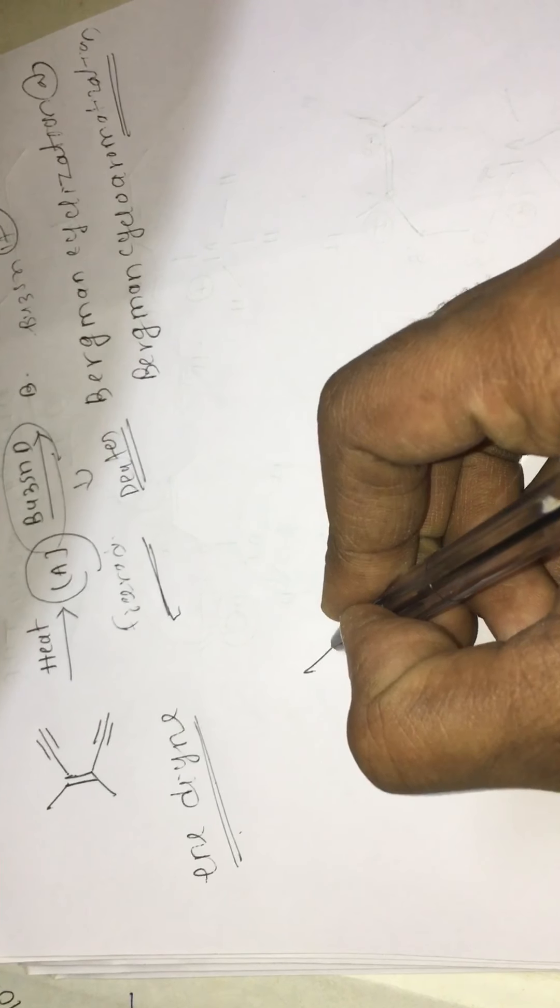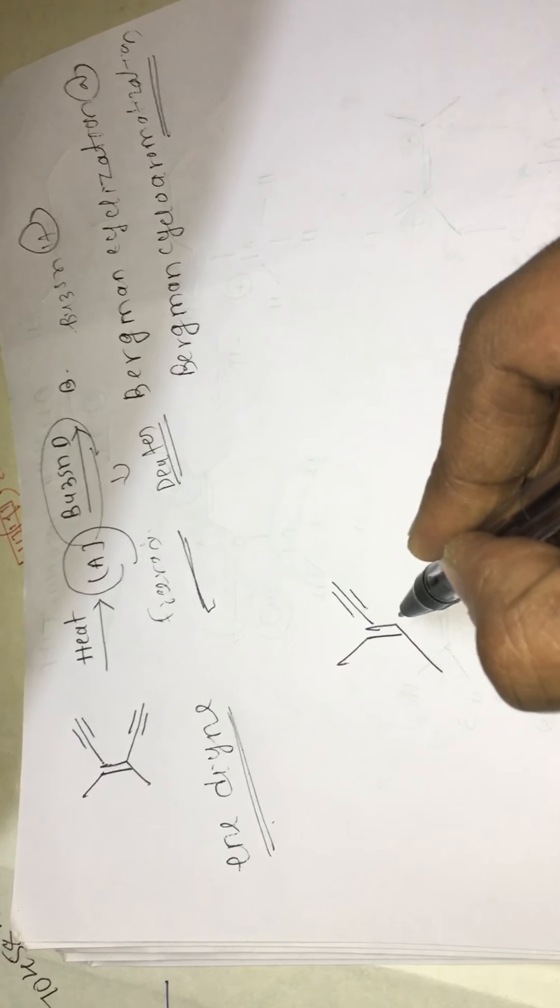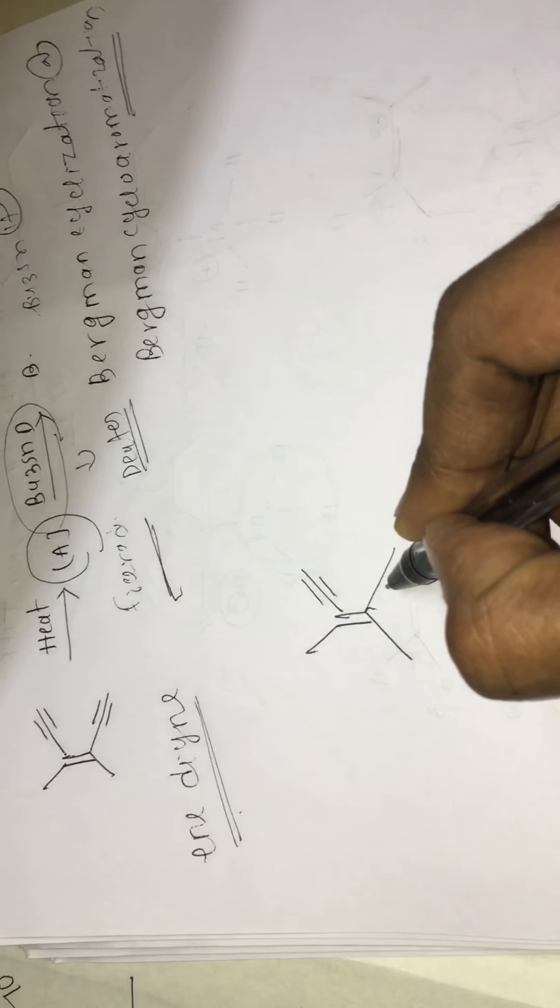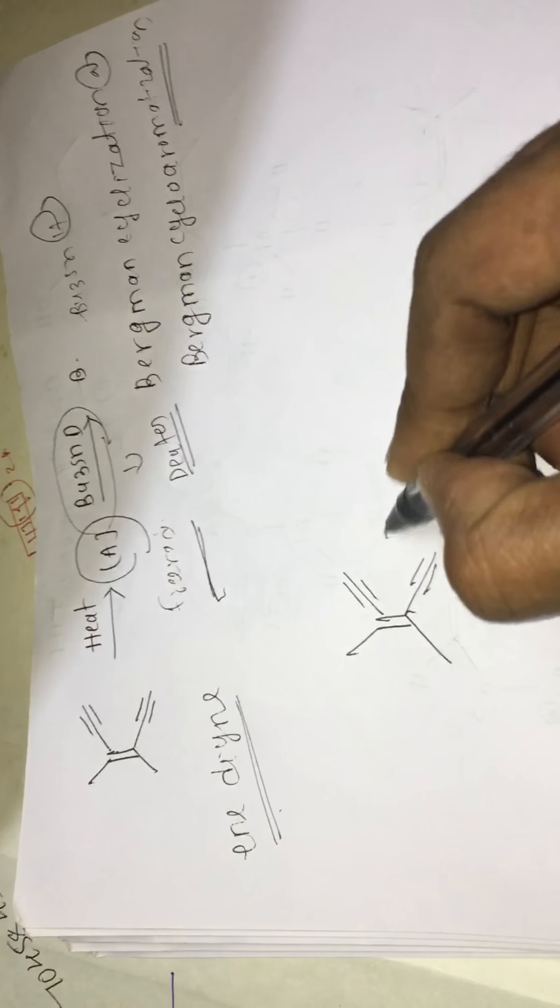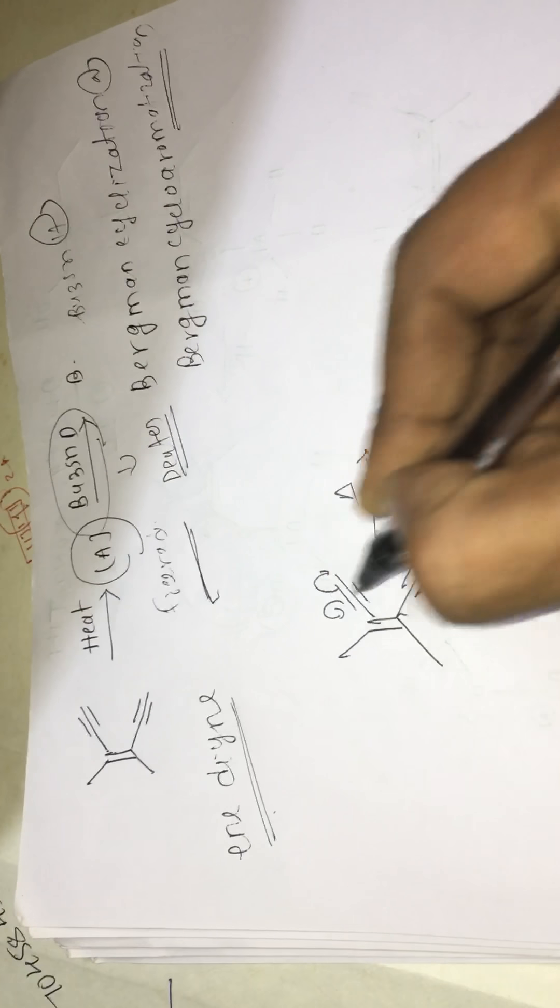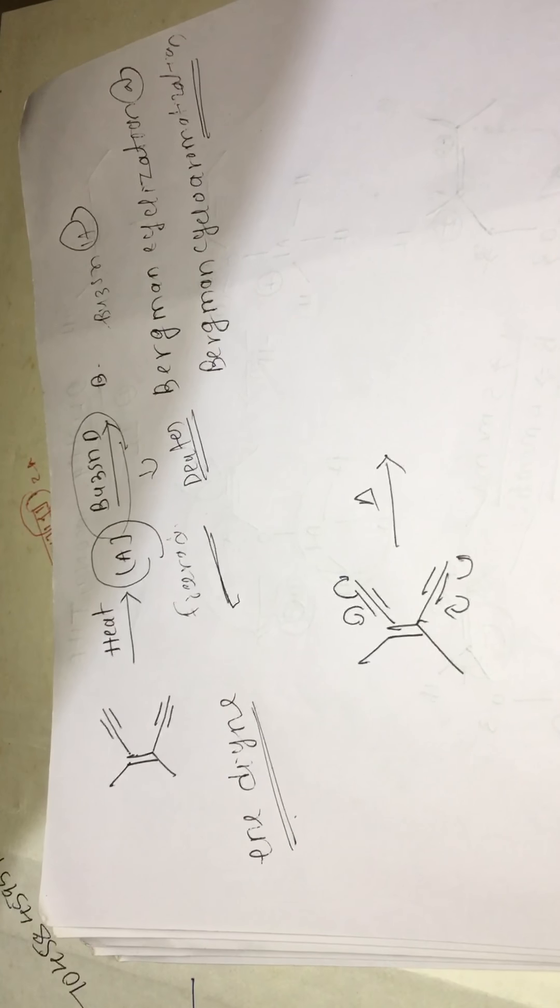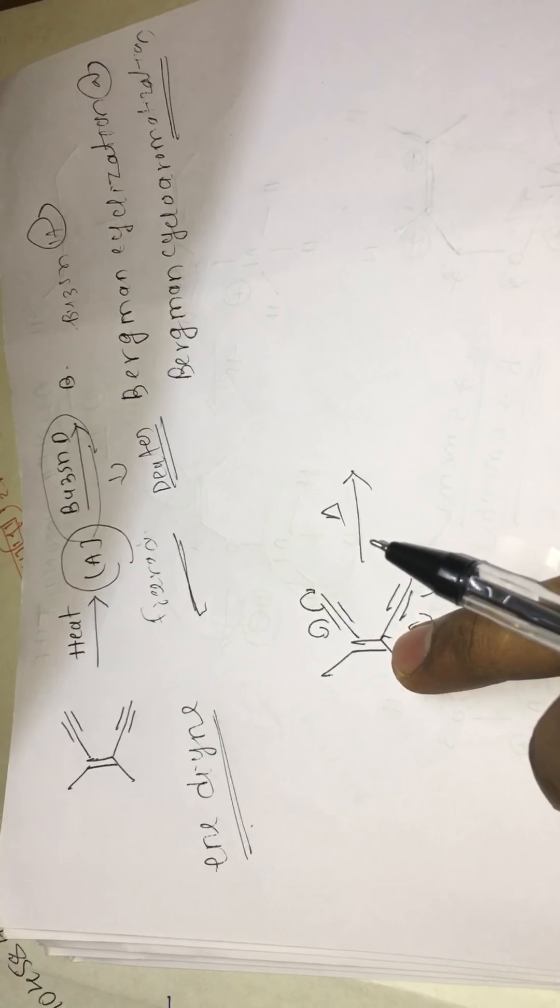So here we are heating. So that this here free radical will be generated here. Here also free radical will be generated. Just remember that only alkyne will involve the reaction. Enyne will not involve the reaction.